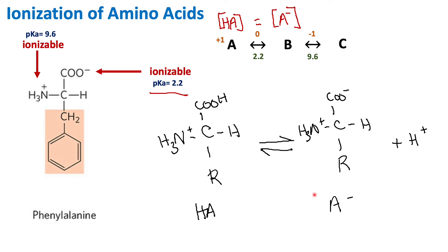To get from form B to form C, the pH must surpass 9.6, which is the pKa of the amino group. In order for the amino group to donate its hydrogen, we must reach a pH of 9.6. Once the pH exceeds 9.6, form C predominates, in which both the amino group and the carboxyl group are deprotonated.